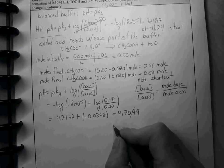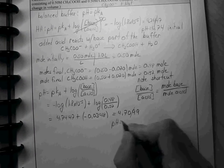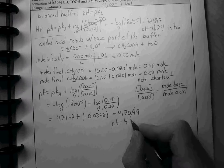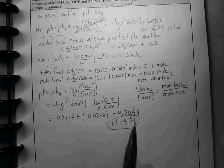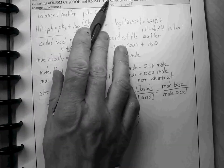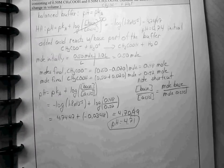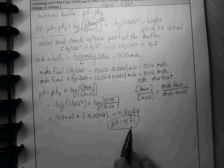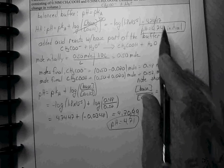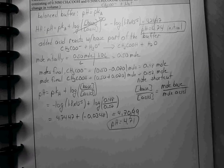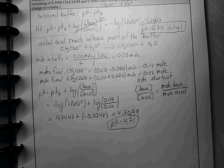Two sig figs, our new pH is 4.71. So by adding a moderate amount of a strong acid to a buffer, our pH has decreased. We started at 4.74, and we've decreased by 0.03 pH units, so the pH has gone down, but only by a small amount due to the buffer action.